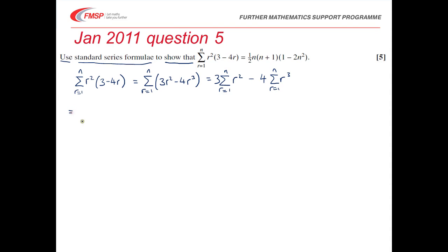So copying carefully from the formula book, that's 3 lots of 1 sixth n, n plus 1, 2n plus 1, minus 4 quarters n squared, n plus 1 squared.